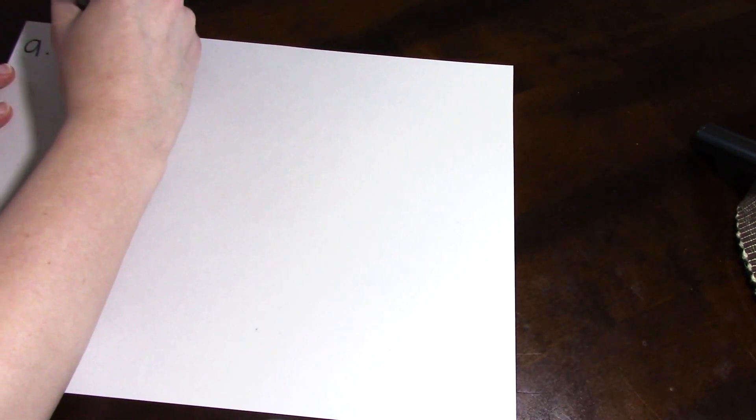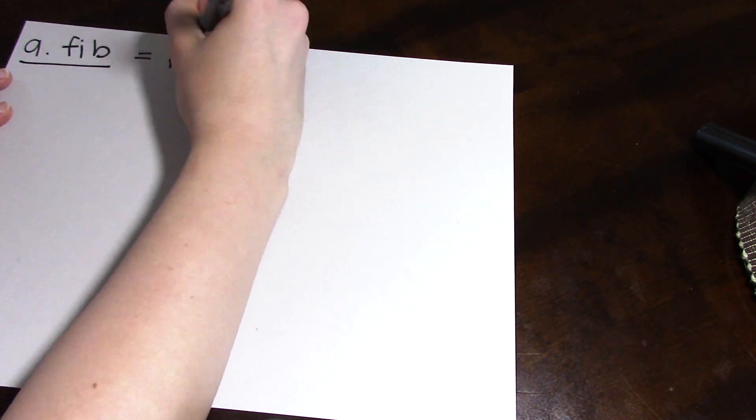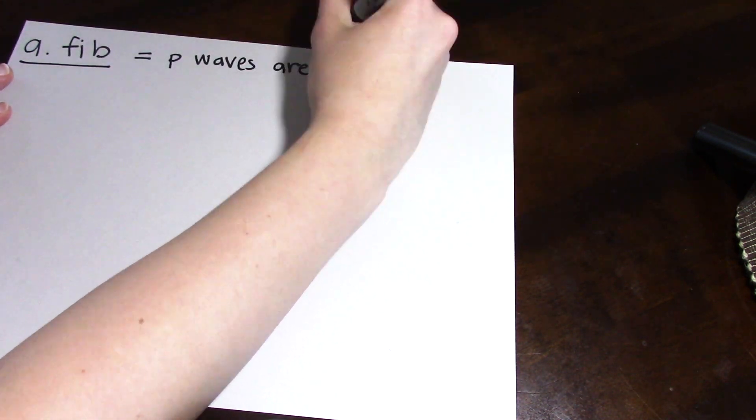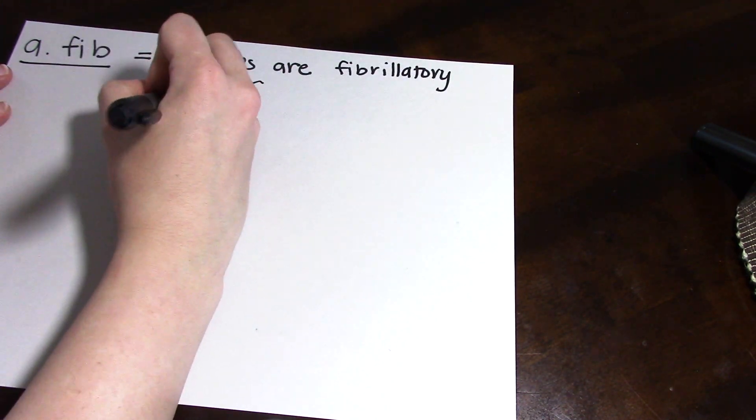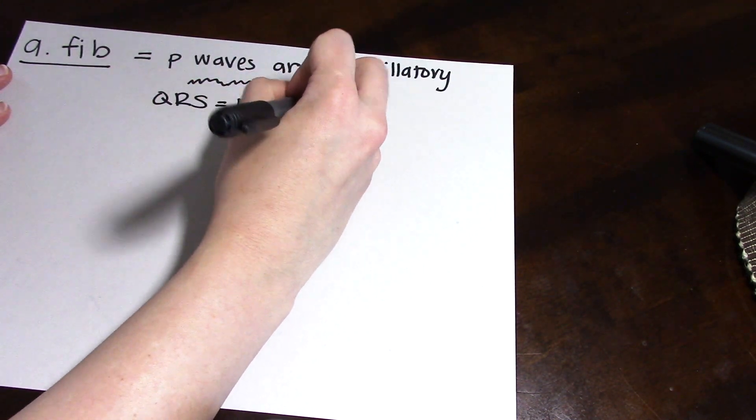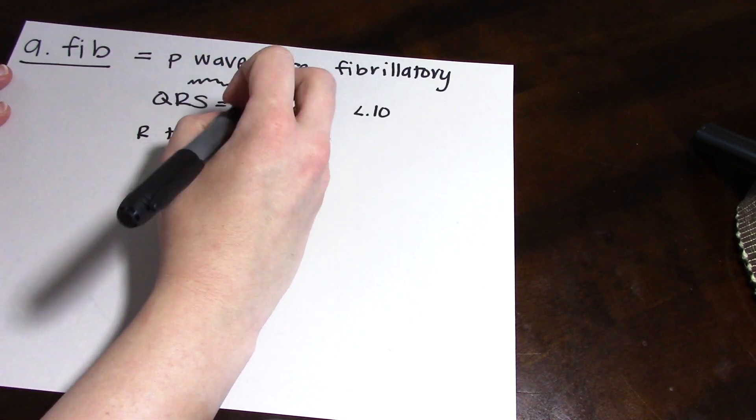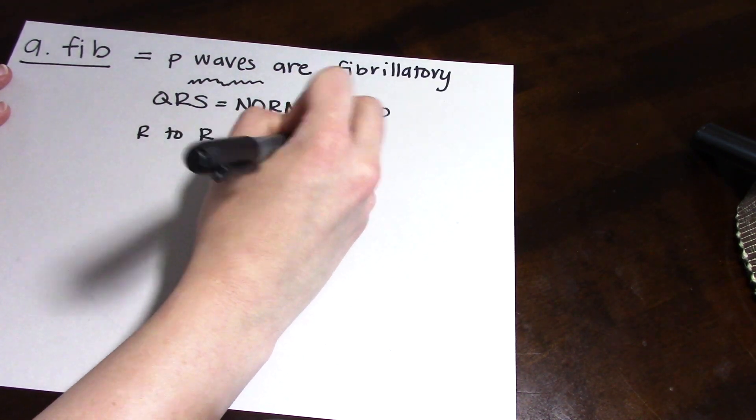So first, atrial fibrillation. Atrial fibrillation has abnormal P waves. The P waves are fibrillatory or look like a little squiggle line, and your QRS's are normal, so less than 0.10 seconds. Also, your R to R intervals are going to be uneven.